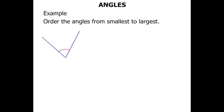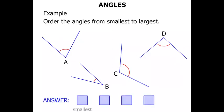Let's look at an example. We're asked to order the angles from smallest to largest. So we've got angle A there, angle B, angle C and angle D. So our answer, we're going from smallest to largest.